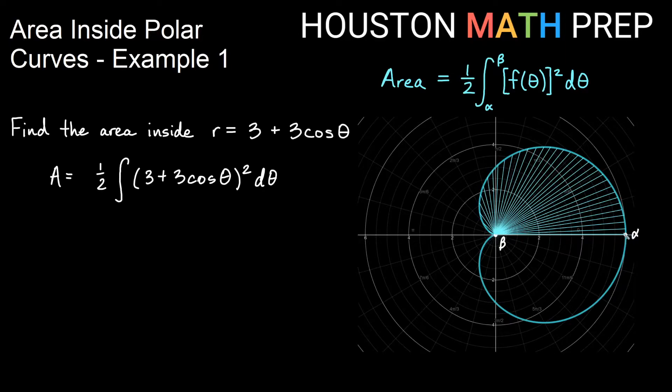So we could check and make sure at an angle of zero, do we get r equals six? So think about plugging in zero here for theta. We would have 3 plus 3 times cosine of zero. Cosine of zero is 1, so that would give us 3 times 1. We'd have 3 plus 3, which is 6. So this is definitely zero out here. So we get an alpha value of zero.